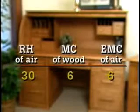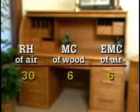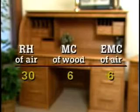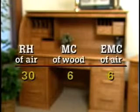The moisture content of the air is referred to as the equilibrium moisture content, or EMC. For our example of 30% relative humidity, the air is 6% EMC. There are four key values of relative humidity and corresponding EMC that a wood manufacturer or user should be very familiar with, and in fact would be wise to commit to memory.